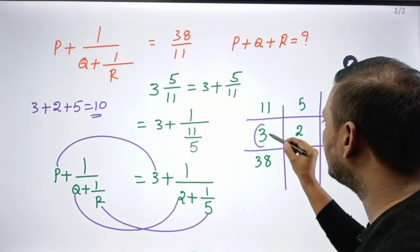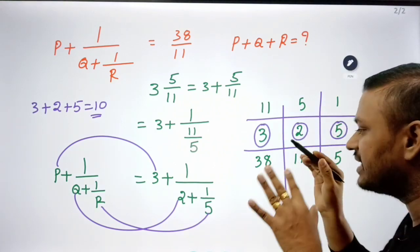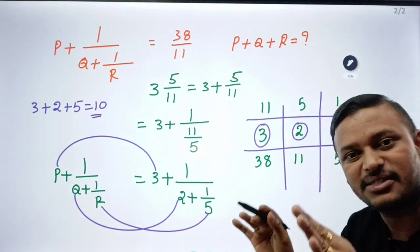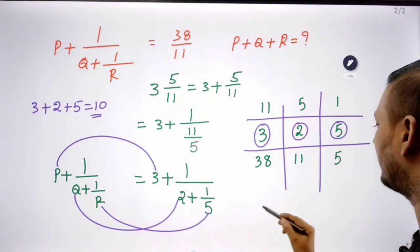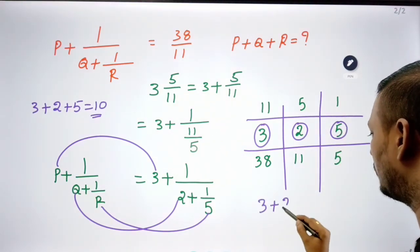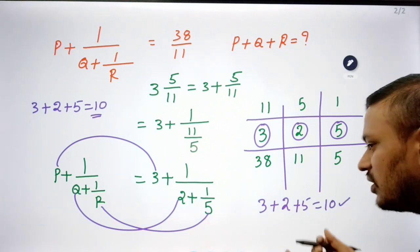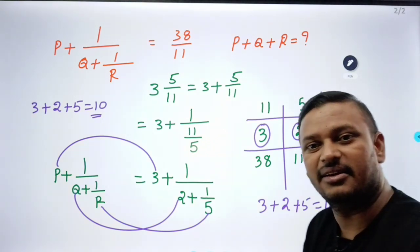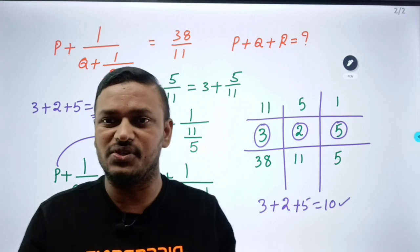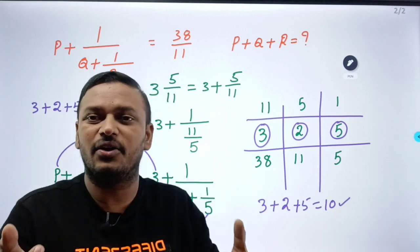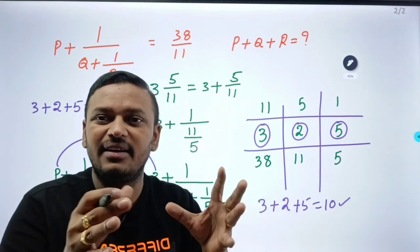P value 3, Q value 2, R value 5. P plus Q plus R equals 3 plus 2 plus 5. Answer: 10. It is a small technique for complicated questions — we do easy techniques.